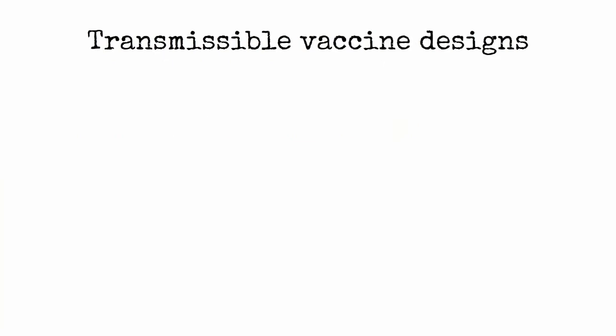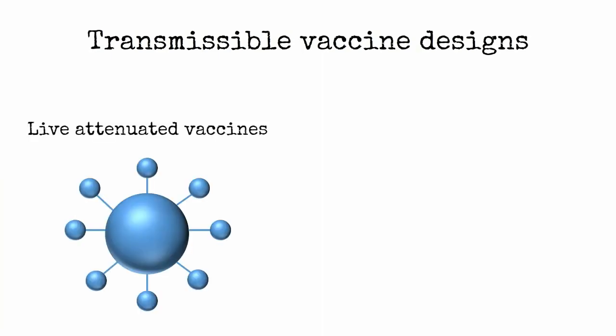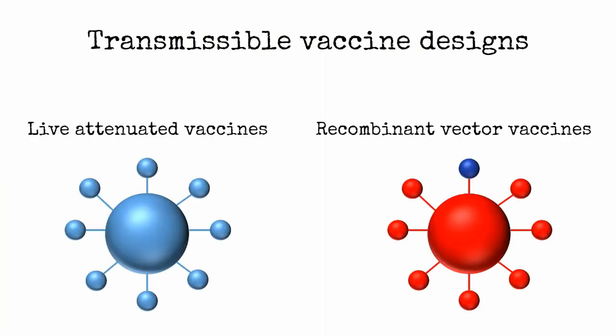There are two main vaccine designs currently in use with the potential to transmit: live attenuated vaccines and recombinant vector vaccines.